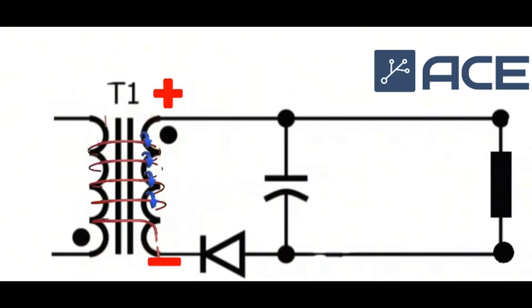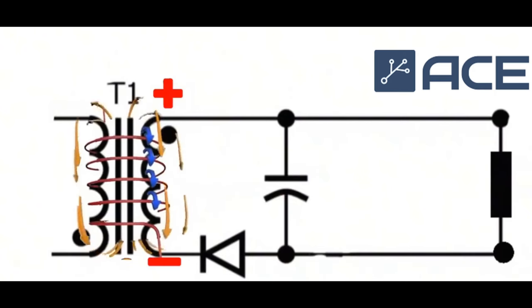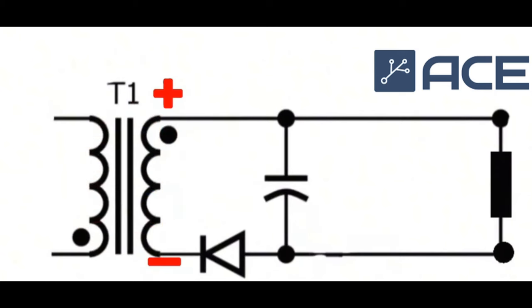Charging upper part of capacitor positively and lower part negatively, capacitor plates have many free electrons. Larger plates contain more electrons. With same current conditions, larger plates result in longer charging time.